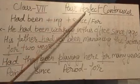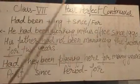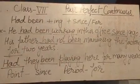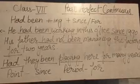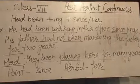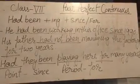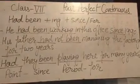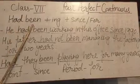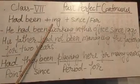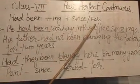We are going to start past perfect continuous. In past perfect continuous, an action began in the past and continued for a long time. For it, we use had been plus the verb with -ing, and either since or for.